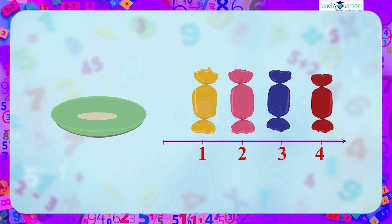Now that we have placed all the chocolates on the number line, how many chocolates are left on the plate? There is nothing left on the plate. Mathematically, we represent this as zero.